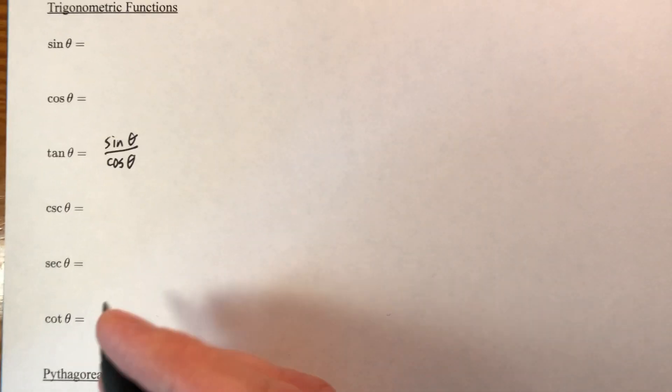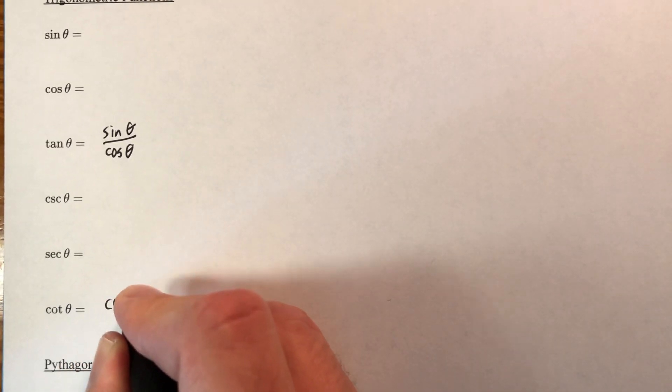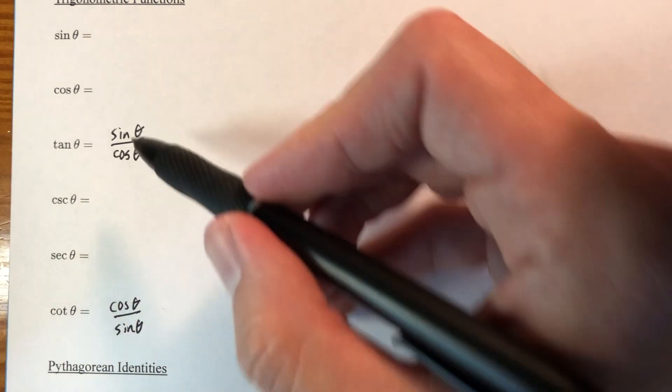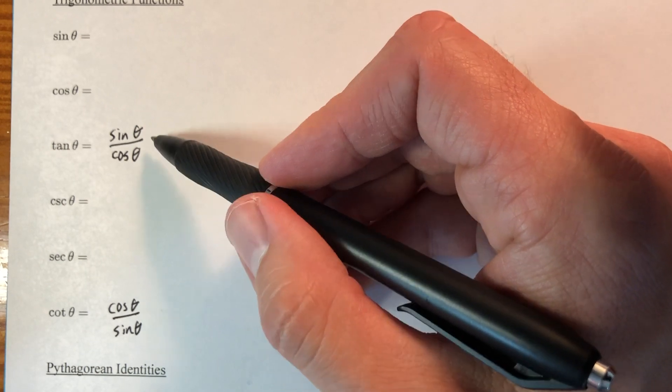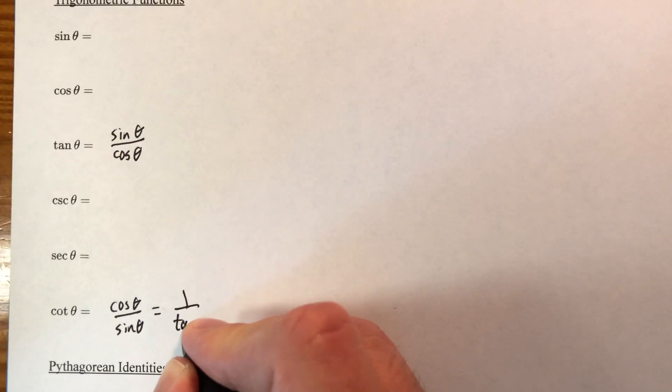These are the reciprocal of everything that you see up here. So cotangent, is what this is called, is the reciprocal of tangent. Notice I just took the numerator, made it the denominator. Denominator becomes the numerator. It's the reciprocal. If you want to get a little technical, you could also say that this is one over tangent. It's the same thing.